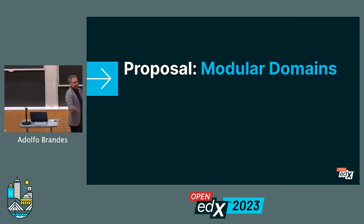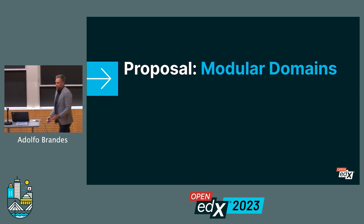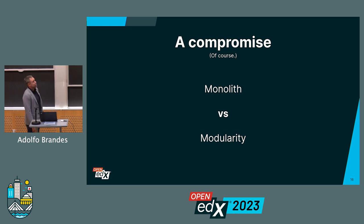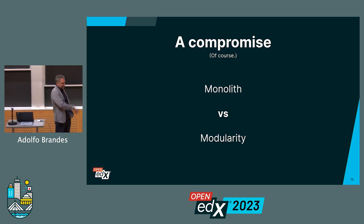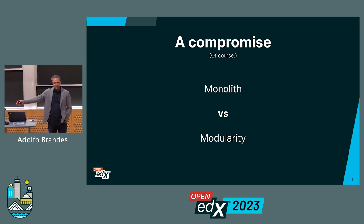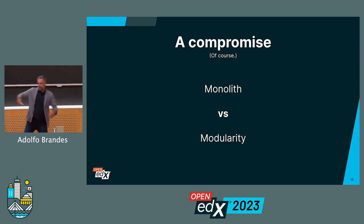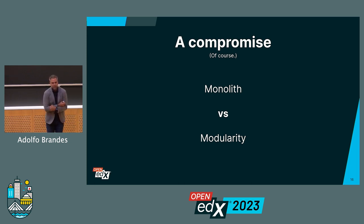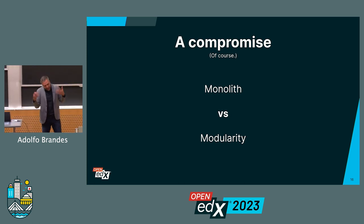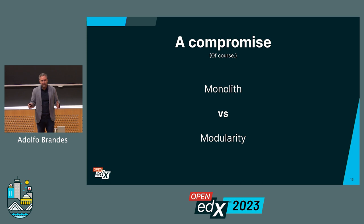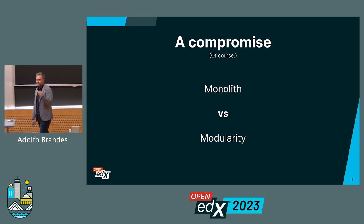So let's get to what we're proposing to do about it — a compromise. On one hand, we have complete independence — modularity. On the other, we have the monolith, where every developer's hands are tied to a particular set of requirements. In the monolith, I'm in a straightjacket; I have to stick to the pattern and it's very difficult to move forward. We're going to have to come to an agreement as to what the compromise is, and that's what we set forth to do.